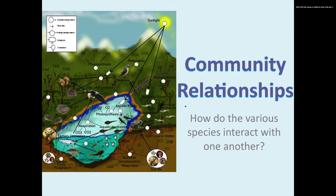Hi class. In this screencast we're going to look more closely at the level of the biosphere called the community — remember, the community is many populations in one area at one time. You can imagine that those populations are interacting with each other and they rely on each other for survival. We're going to look at how these various species actually interact with one another in order to survive and reproduce.